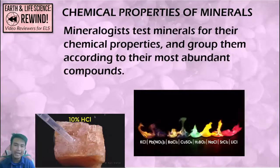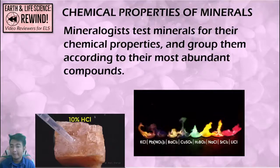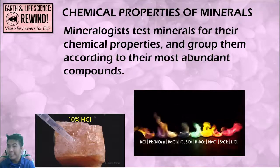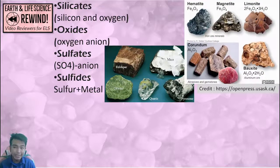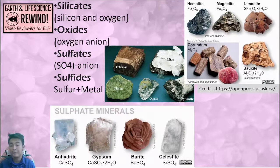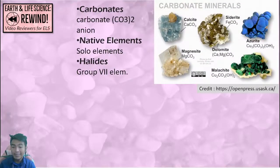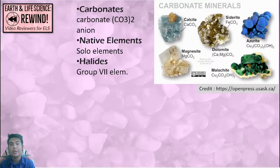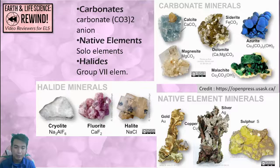Last are the chemical properties of minerals. Mineralogists test minerals by adding acids or bases to identify their components and categorize them by their main ingredient. Silicates have silicon and oxygen as their main ingredient. Oxides are metals mixed with oxygen. Sulfates are mixed with SO₄. Sulfides are metals mixed with sulfur. Carbonates have carbonate (CO₃) with other metals — calcium carbonate and dolomite are examples. Native element minerals are almost pure — gold, copper, and silver ores. Halides are metals mixed with group 7 elements of the periodic table.